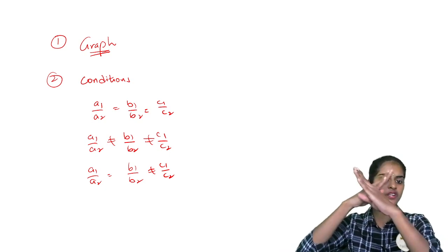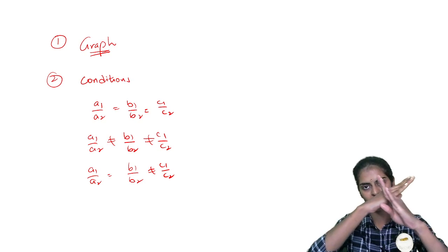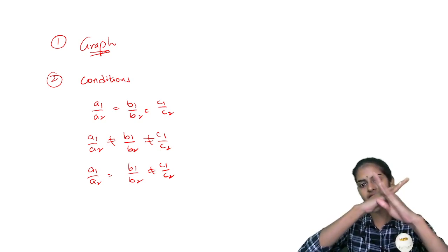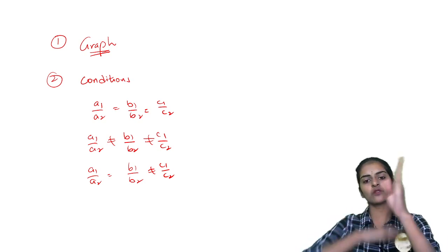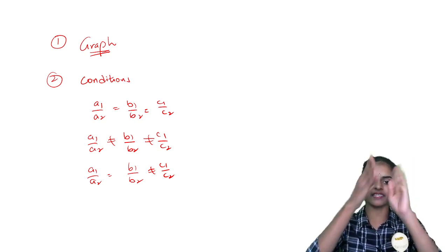If A1 by A2 is not equal to B1 by B2 is not equal to C1 by C2, the lines are intersecting. Not equal, not equal, not equal means intersecting. If A1 by A2 is equal to B1 by B2, only these two are equal, then they are parallel.